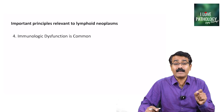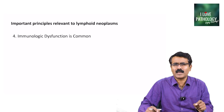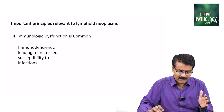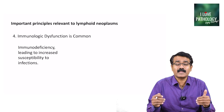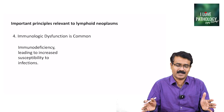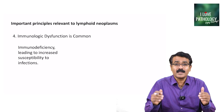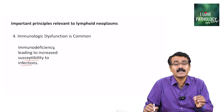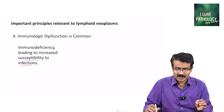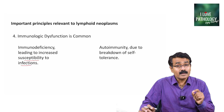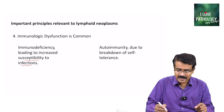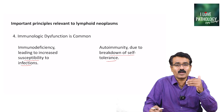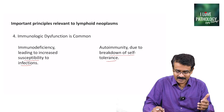The next principle is that in most lymphoid neoplasms, immunological dysfunction is a common feature. This means they can present with immunodeficiency states, and because of immunodeficiency, these patients have an increased risk for development of infections — increased susceptibility to various infections. It can also result in autoimmunity due to breakdown of self-tolerance. These are the two important immunologic dysfunctions to know in lymphoid neoplasms.